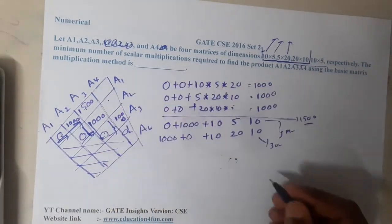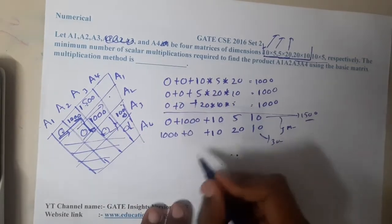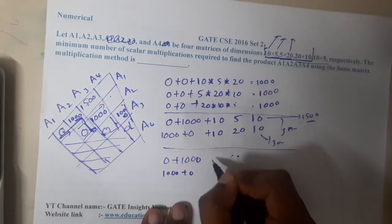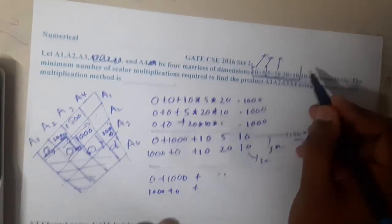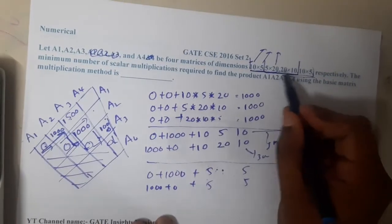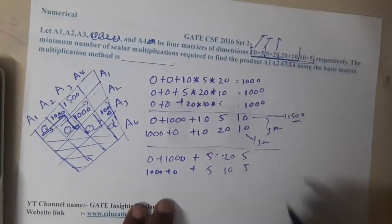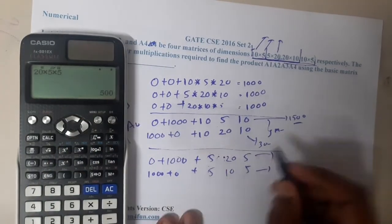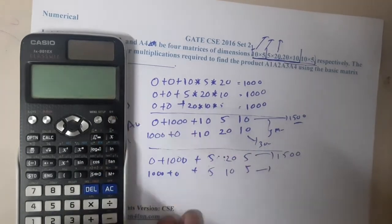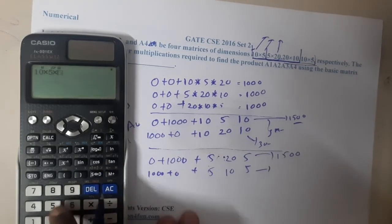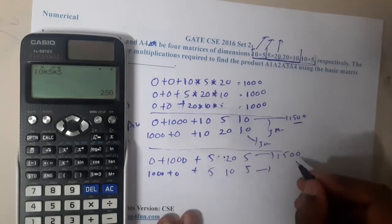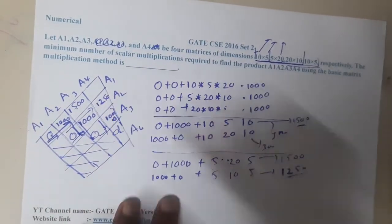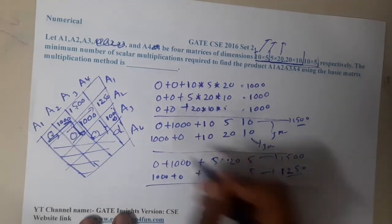Similarly at the other point, we add 0 + 1000 and 1000 + 0. Now for a2 to a4, 5 is at start and end, with 20 and 10 in between. The two options are: 20 × 5 × 5 = 500 + 1000 = 1500, and 10 × 5 × 5 = 250 + 1000 = 1250. The minimum value is 1250.